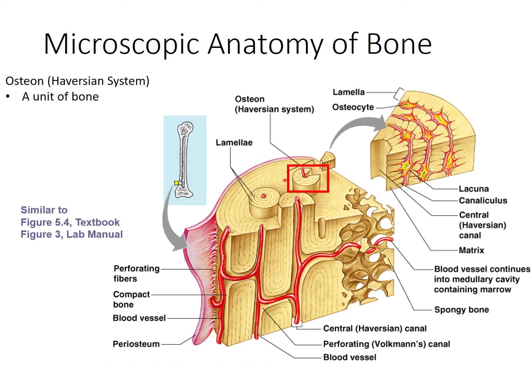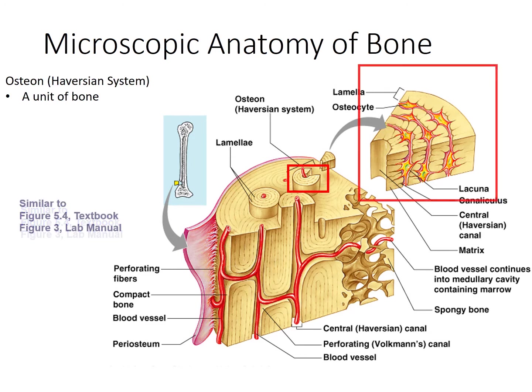Now if we were to magnify this osteon, we'd get something that looks like this. Here's our central canal, and here are our concentric rings of bone tissue. Notice the rings are called lamellae — that's where the extracellular matrix is found.